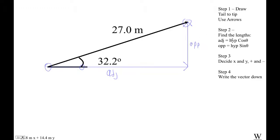Okay, so let's find the lengths. This is our hypotenuse, our magnitude. This is adjacent, opposite, or whatever. Here's our angle here. So the adjacent side is hyp cos, right? So it's 27 cos 32.2. Let's do that.